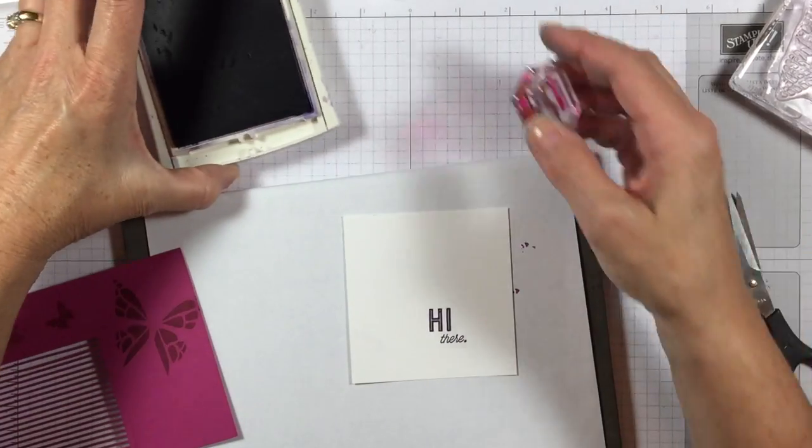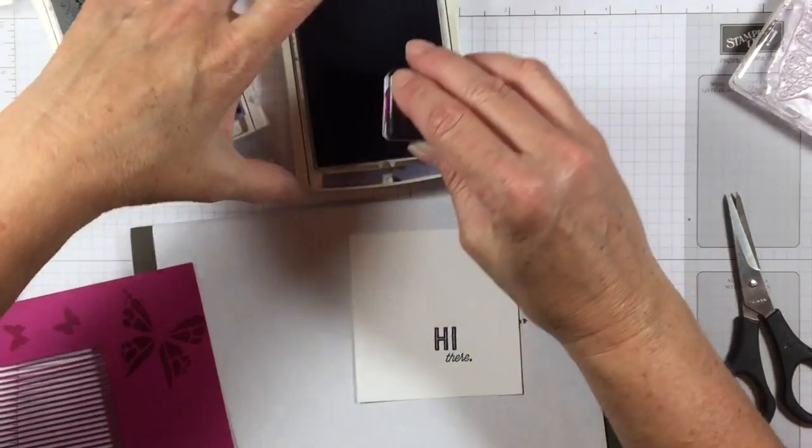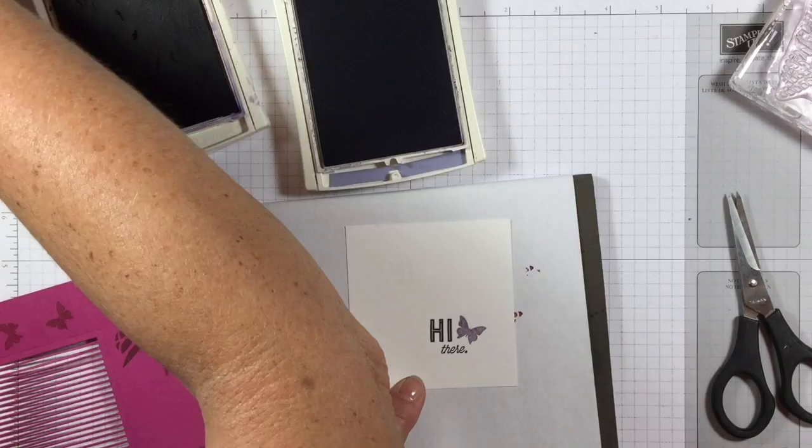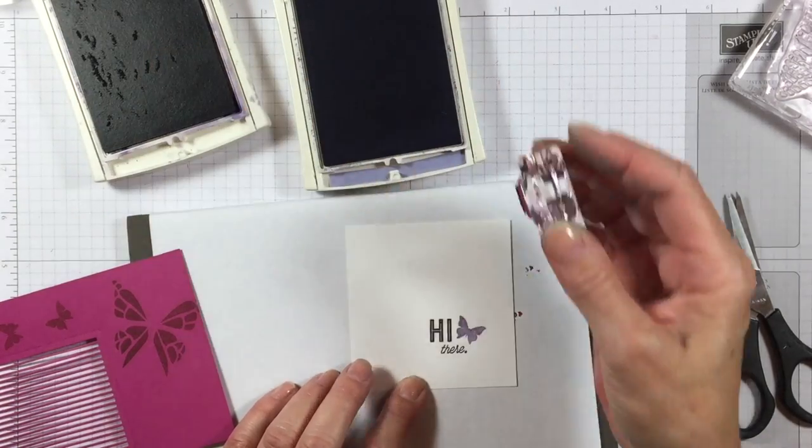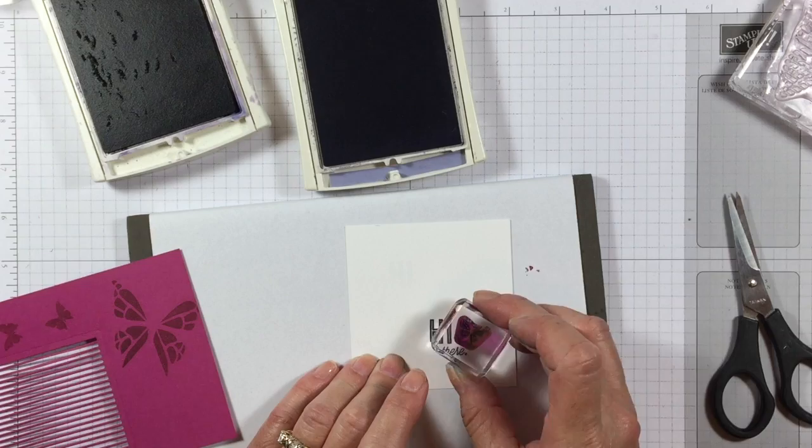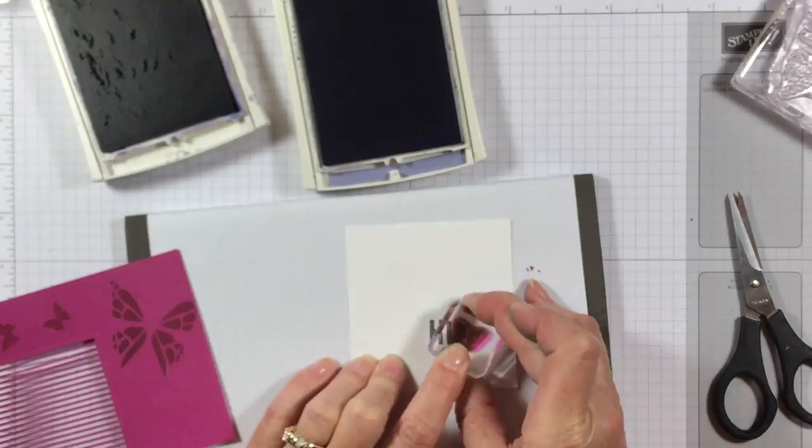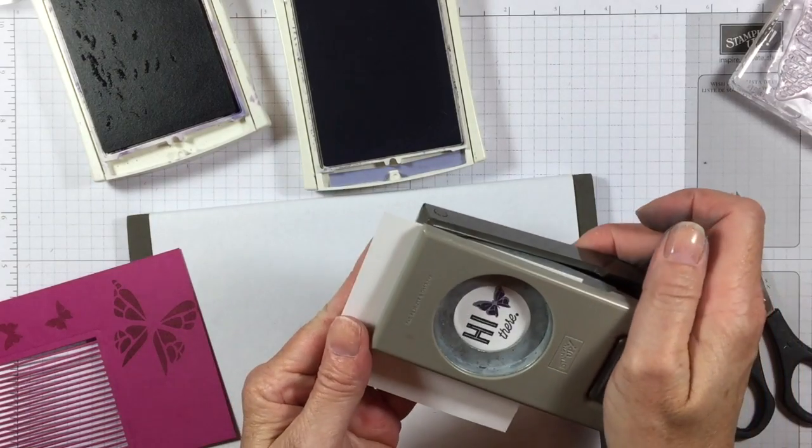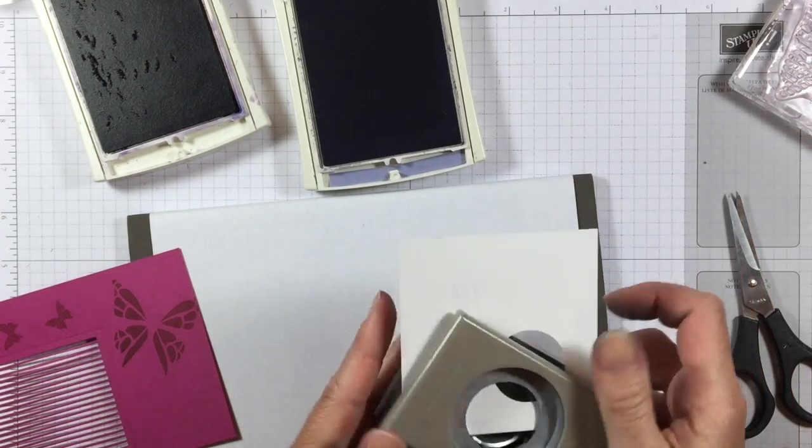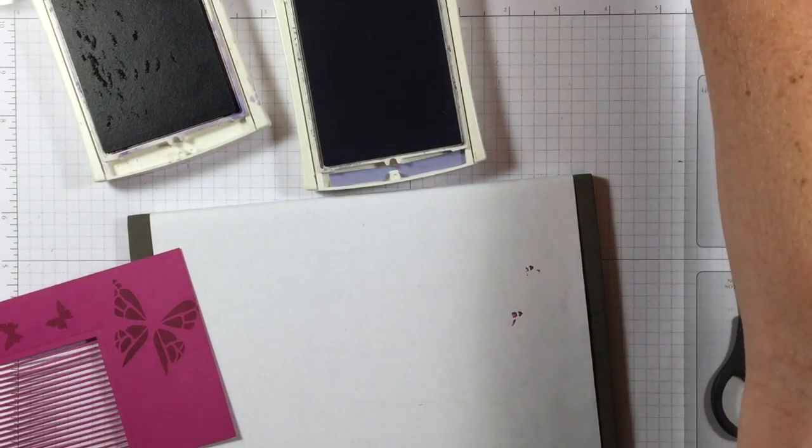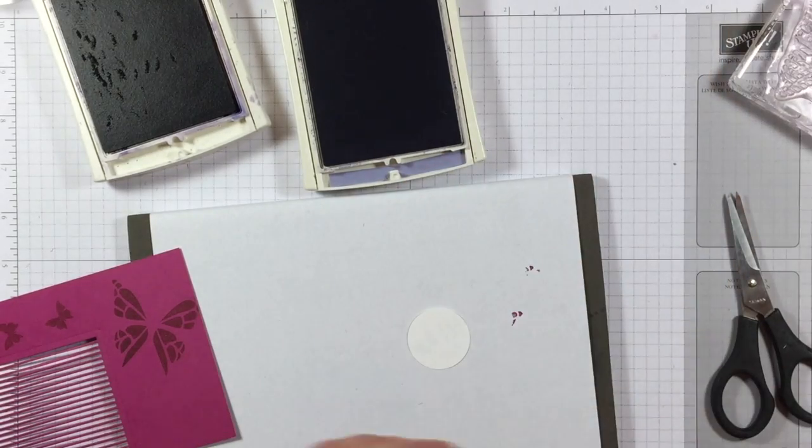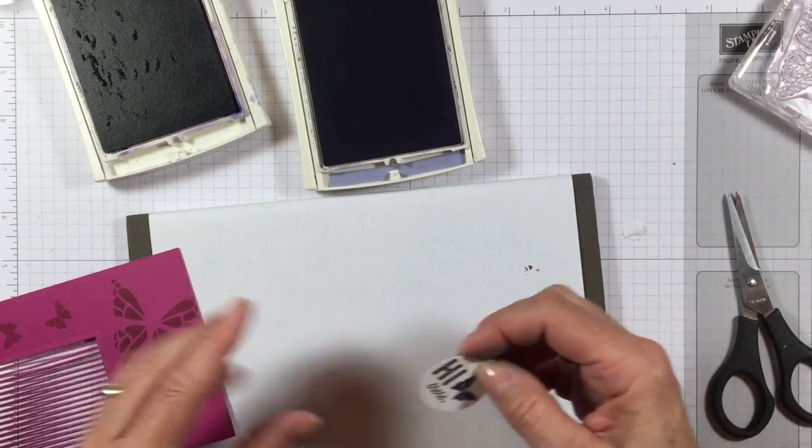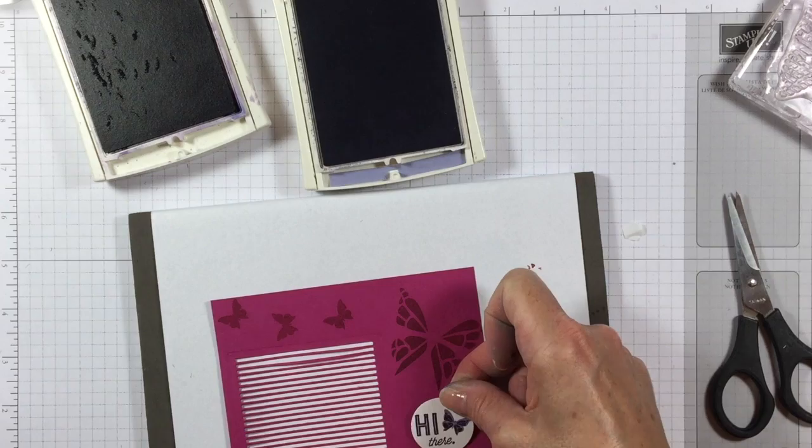Then I've also got the butterfly. I'm going to do something different with it—I'm going to stamp it with Wisteria Wonder, and that's the solid butterfly. Here is a detailed butterfly that I'm going to stamp in Elegant Eggplant. There we go. Punch this out with a 1 and 1/4 inch circle punch.